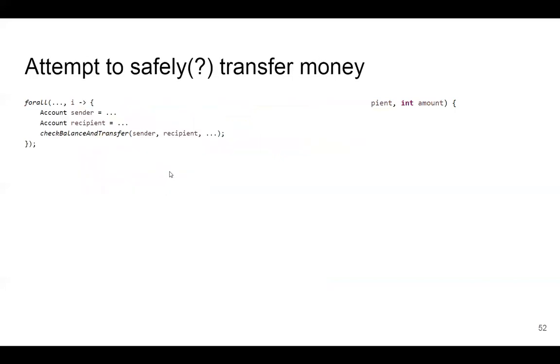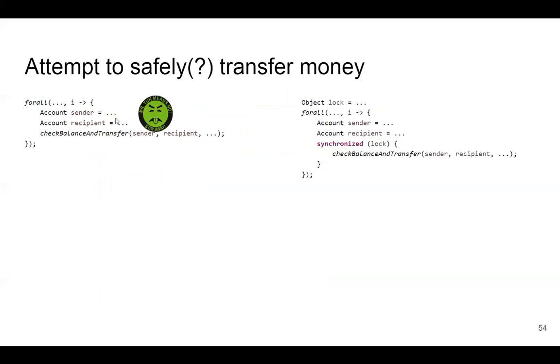Let's attempt to safely transfer money. The first thing I want you to imagine is: for all transactions you want to make, take the sender and recipient and transfer from here to here. This is a big fat ugly data race, so this is no good. You can imagine this other aspect where you have one global lock.